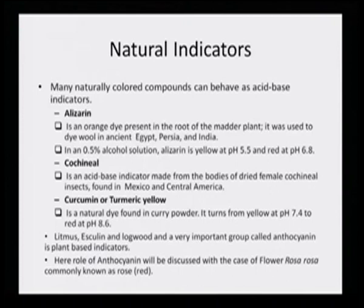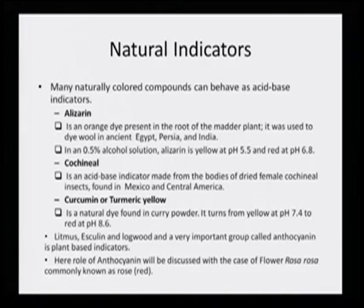Curcumin or turmeric yellow is a natural dye found in curry powders. It turns yellow at pH 7.4 but red at pH 8.6. If there is a turmeric mark on your dress and you wash it with soap — which is alkaline — the yellow mark turns into a reddish-orange shade. That is what acid-base indicator behavior is all about: if a compound shows change in color at different pH, it falls into the category of materials that can be used as an acid-base indicator.